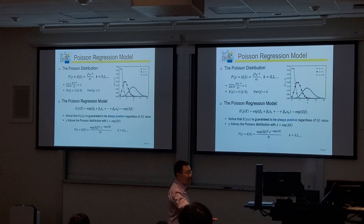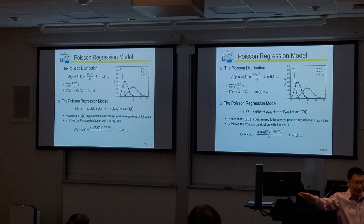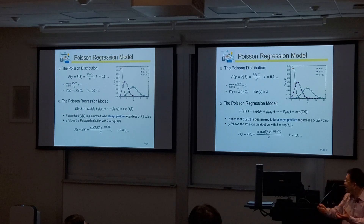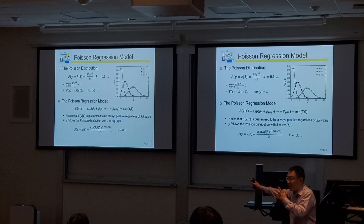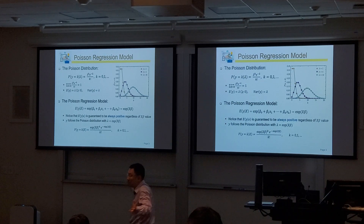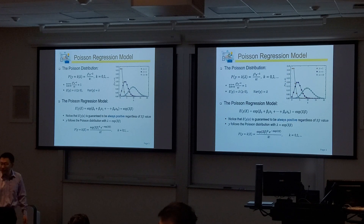How do we estimate that? We estimate using MLE. For each observation, you observe all the x values, which gives you lambda_i for that particular observation. Given lambda_i, you can compute the probability of observing that particular y_i count. That's the likelihood. We write out the likelihood for all observations, multiply them together, and find the beta values that maximize the overall likelihood.